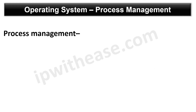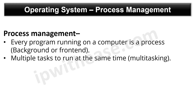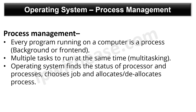Process management is the next task. Every program running on a computer is a process, whether it is in the background or in the foreground. The operating system is responsible for making multiple tasks run at the same time, also called multitasking. The operating system finds the status of the processor and processes, chooses a job and its processor, allocates the processor to processes, and de-allocates the process when it is executed.